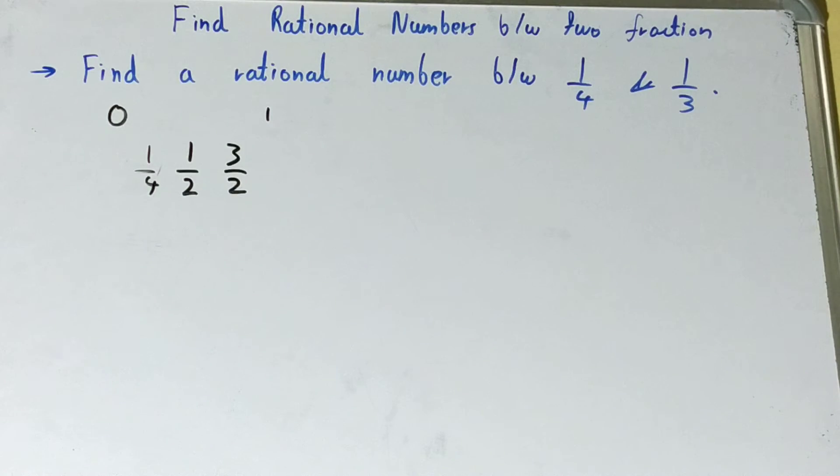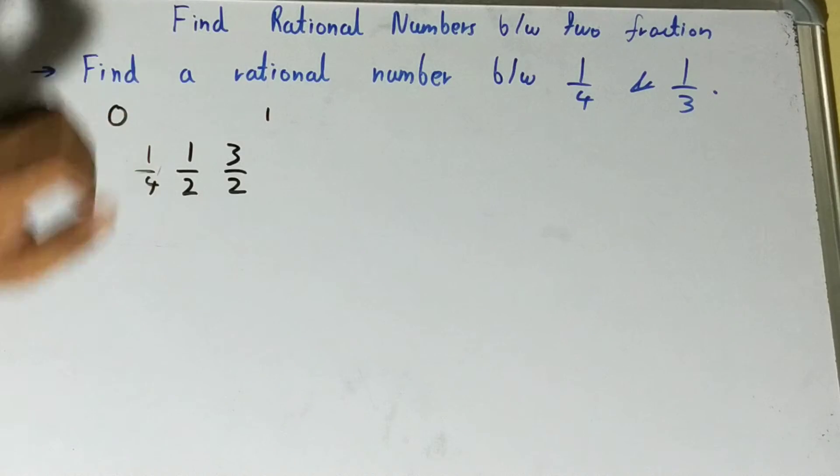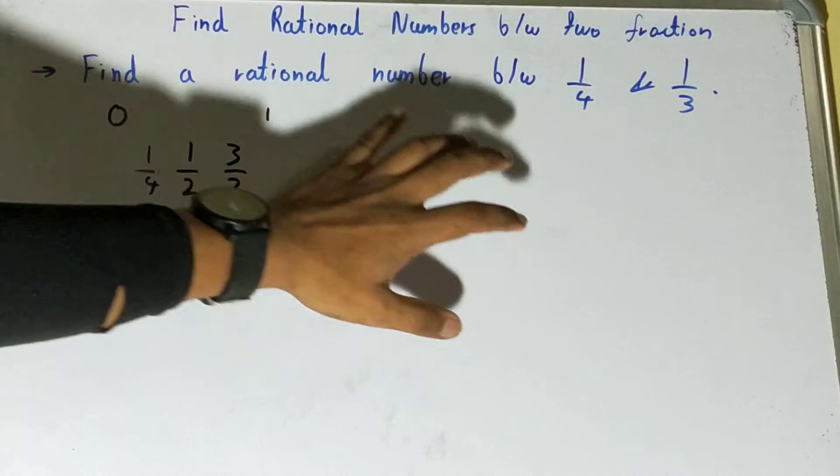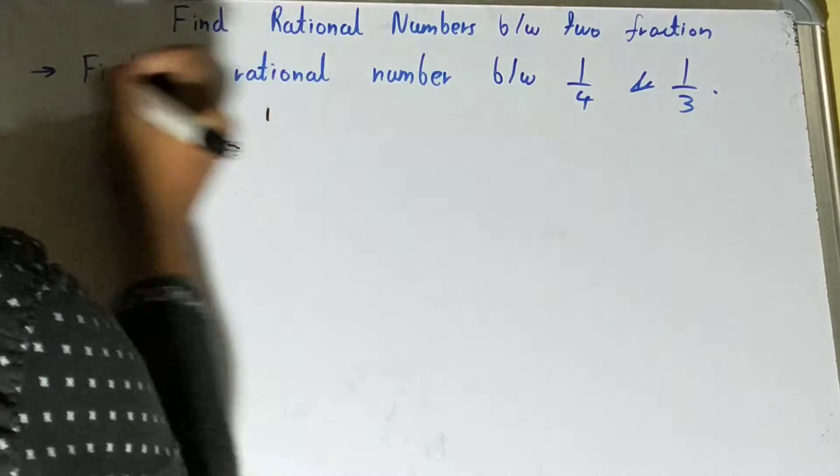So with this concept, we can actually use it to find the rational numbers. Let's try it out. We need only one right now, so we'll just use one by two and we'll add the given fractions.